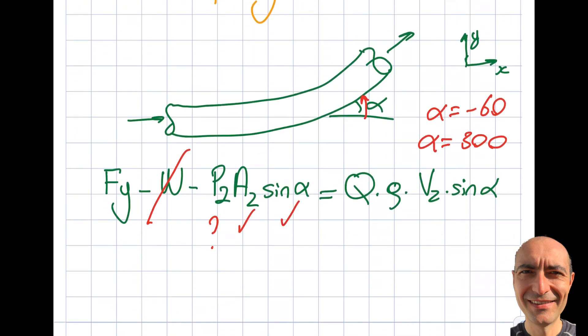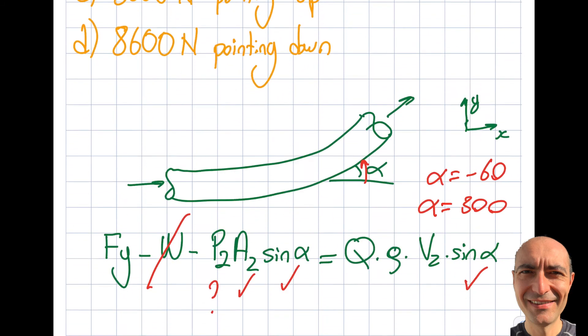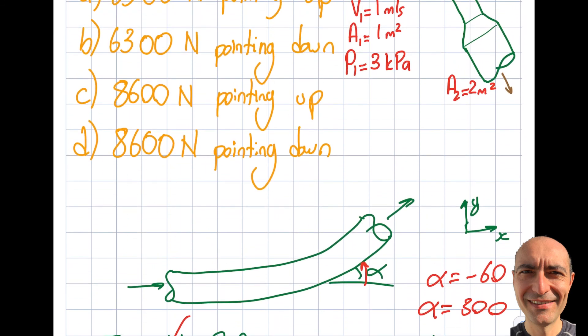Now I know several terms. Q will be v1A1, which I know already. Density is known. But v2 is missing - I don't see v2 right there.